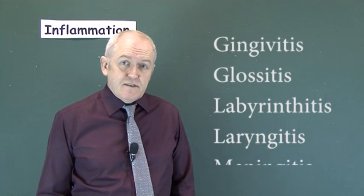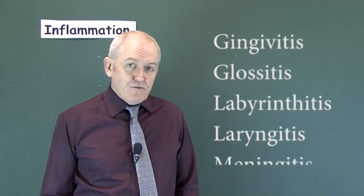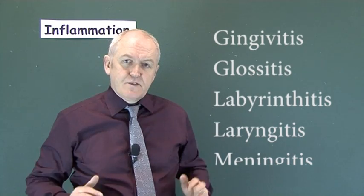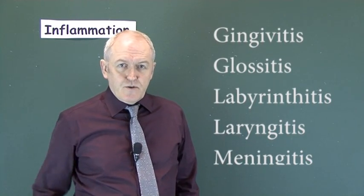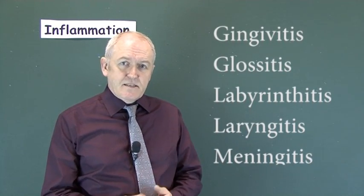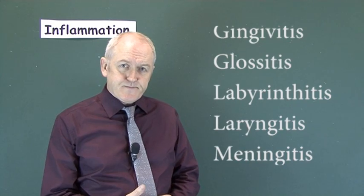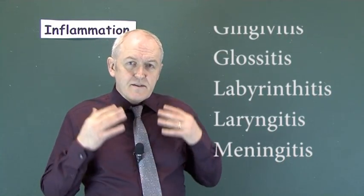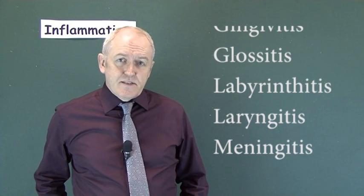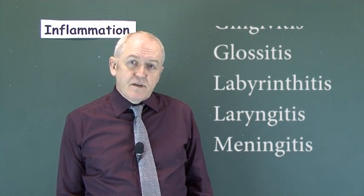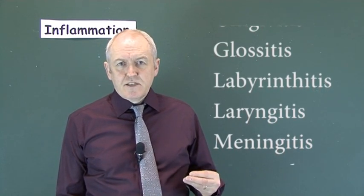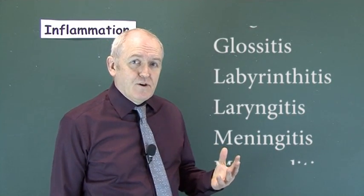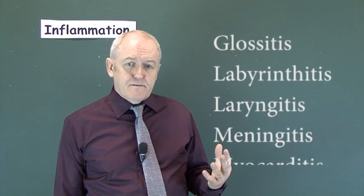Meningitis is inflammation of the meningeal layers surrounding the brain and spinal cord — the dura mater, the arachnoid mater, and the pia mater. The patient can be unwell with a stiff neck. The disease can be viral, but it can also be the much more serious, life-threatening bacterial form.